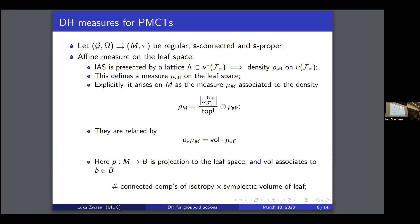So this is how you get the affine measure. You should think of this affine measure as playing the role of the Lebesgue measure from before. In fact, if you do this whole construction in the classical case, you really do just get the Lebesgue measure back. This is the measure that we will be comparing our Duistermaat-Heckman measure to.